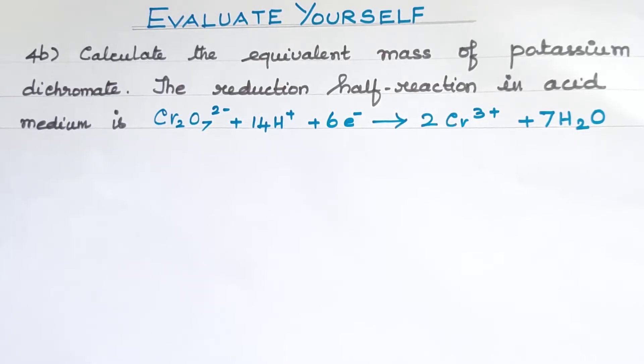Calculate the equivalent mass of potassium dichromate. The reduction half reaction in acid medium is Cr2O7^2- plus 14H+ plus 6e- gives 2Cr3+ plus 7H2O.